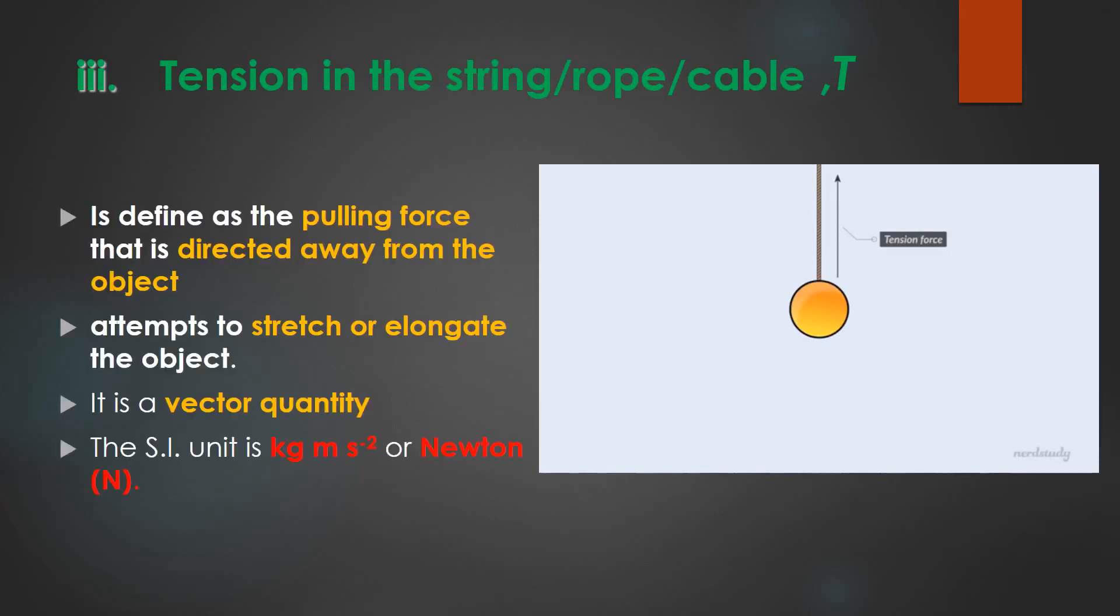Suppose we've got a ball hanging from the ceiling by a rope. What is keeping the ball from falling to the floor anyways? After all, gravity is acting on the ball, right? Well, it's the rope that's keeping the ball up. So the rope must be applying a force on the ball to prevent it from falling. We call that force the tension force because the rope is being put under tension by the ball.